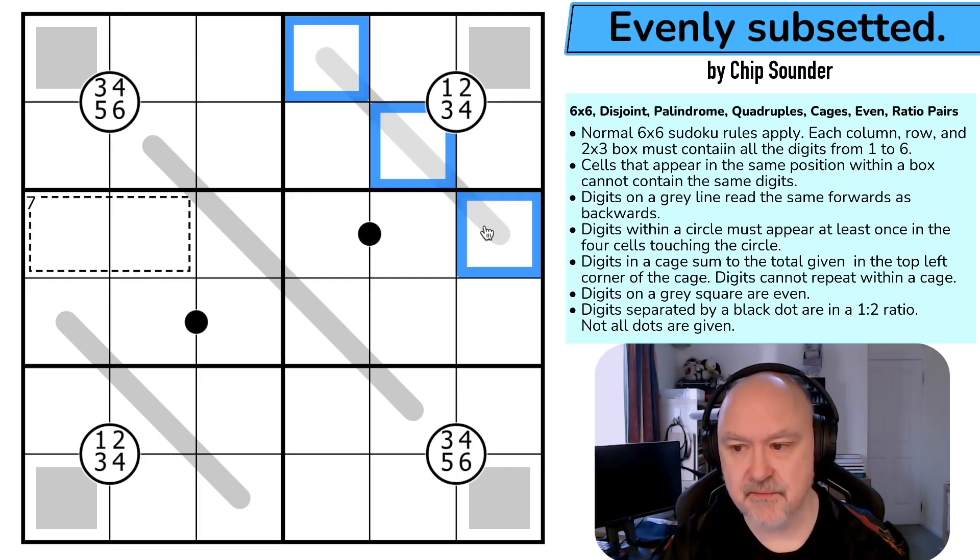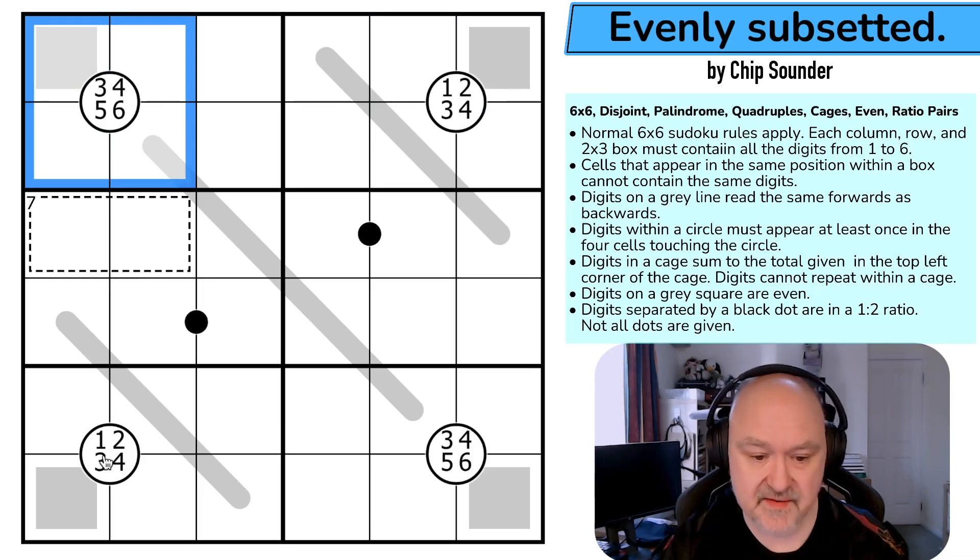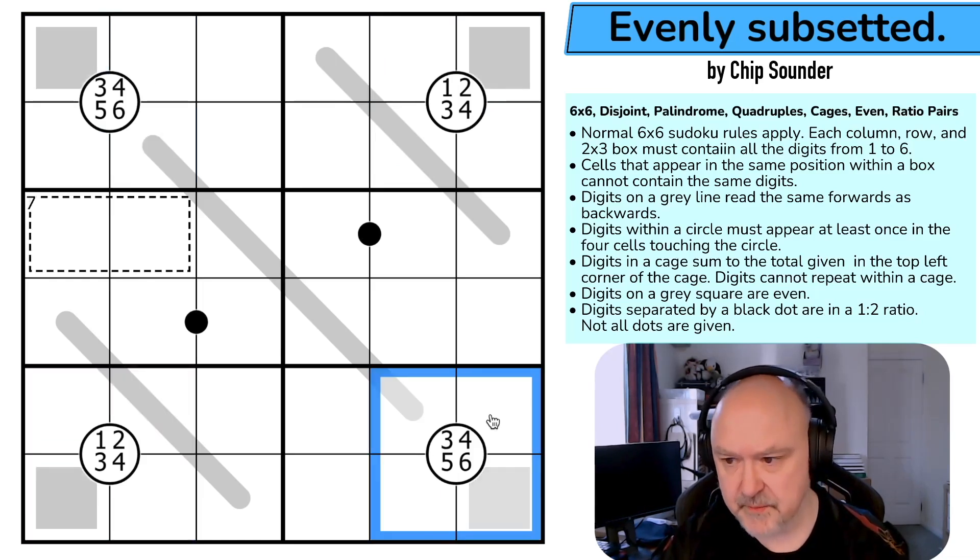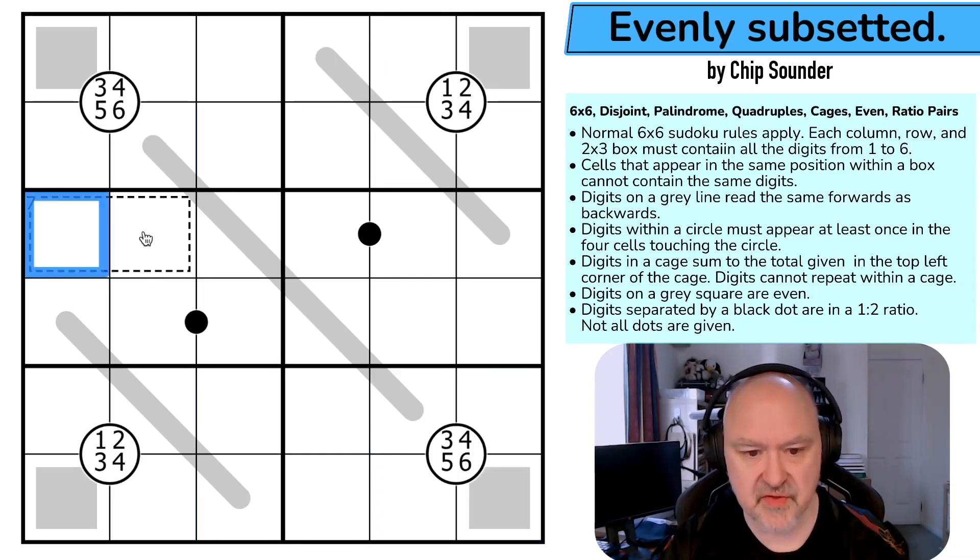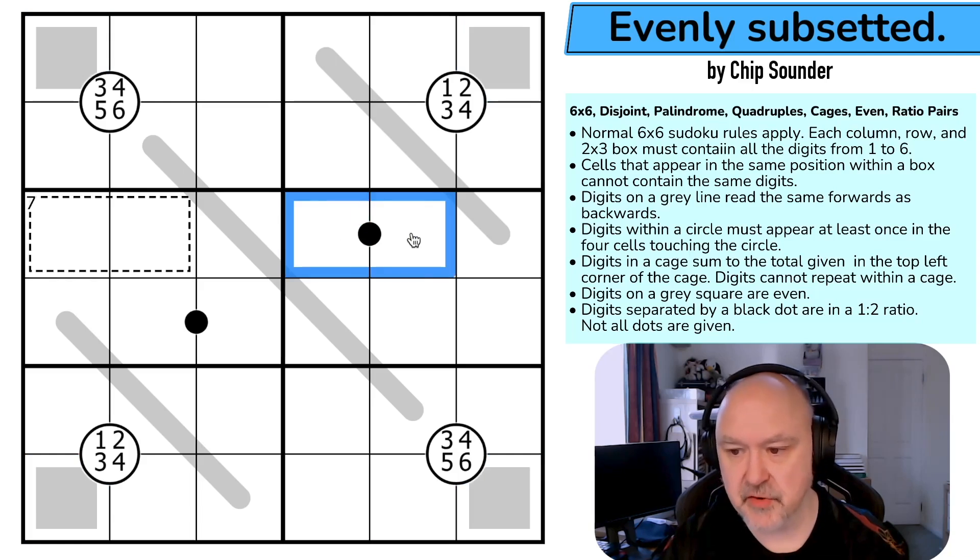Digits on a grey line must read the same forwards and backwards so that's a palindrome. Digits within a circle must appear at least once in the four cells touching that circle. These are very heavily populated quadruple circles. Digits in a cage sum to the total given in the top left corner of the cage. These two cells sum to 7. Digits cannot repeat within a cage. Digits on a grey square are even. We know these are even. And cells separated by a black dot or digits separated by a black dot are in a 1 to 2 ratio. Not all dots are given. I'm going to restart the puzzle to restart my timer. Let's give this a shot.